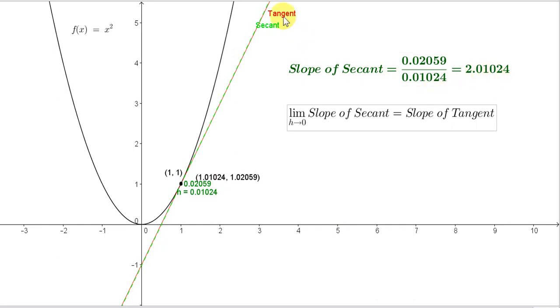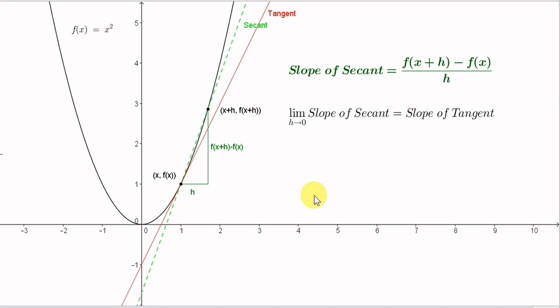Let's see how to calculate the slope of the tangent exactly. We are going to consider the general case — rather than the tangent at the point (1, 1), we will consider the tangent at a general point x. Later we can let x equal 1 to solve the specific problem. A general point on our function has the form x, f(x). In this case f(x) is x squared. Now we are interested in a second point on the curve such that the horizontal distance between these two points is little h.